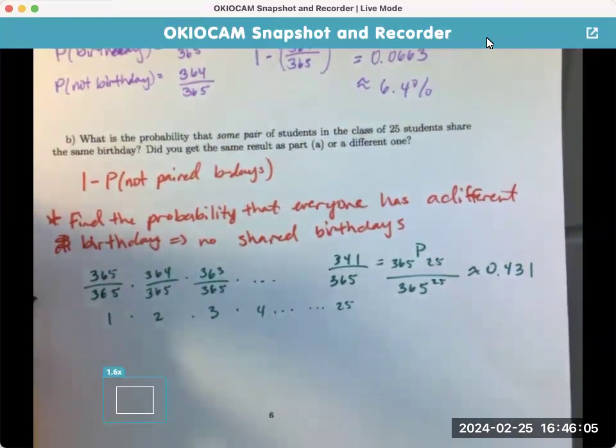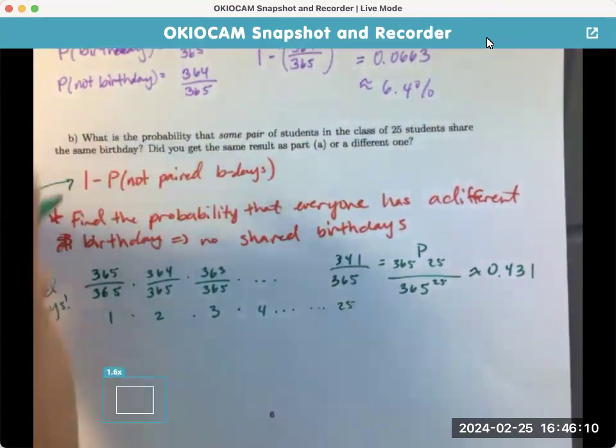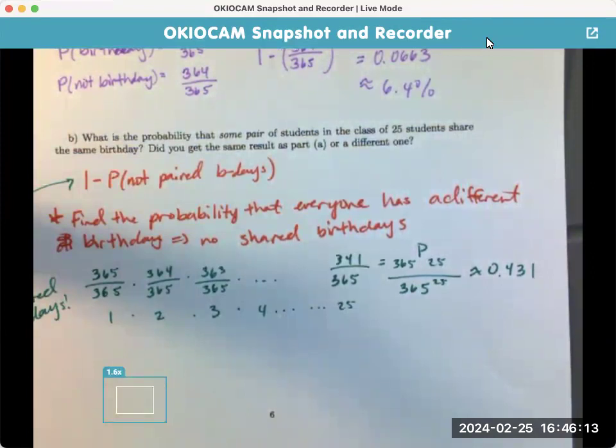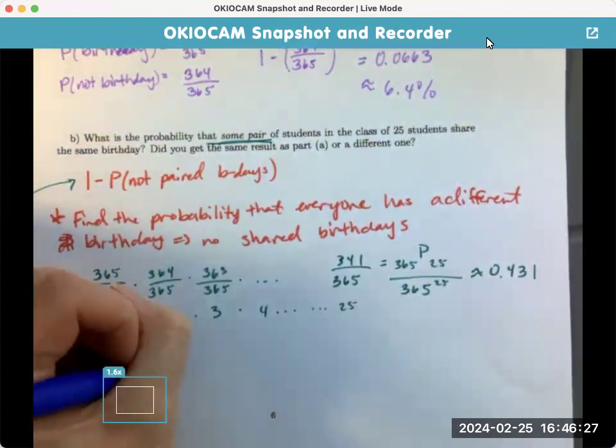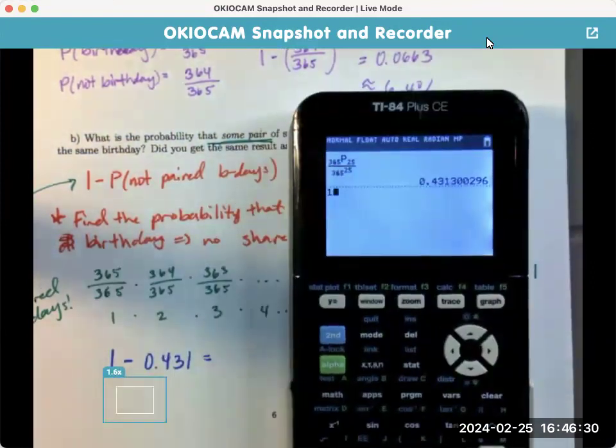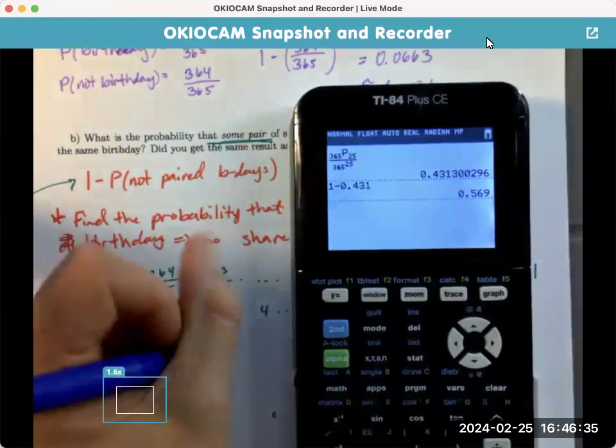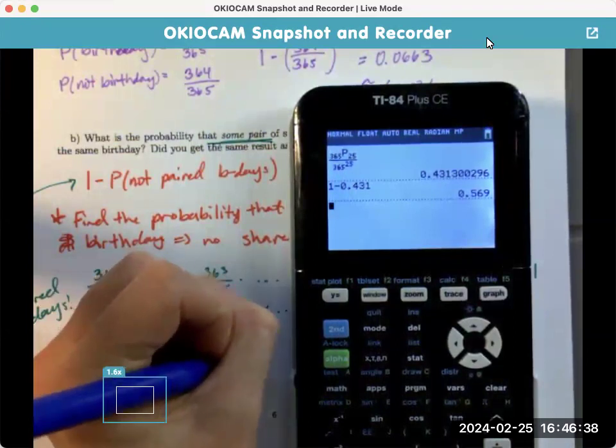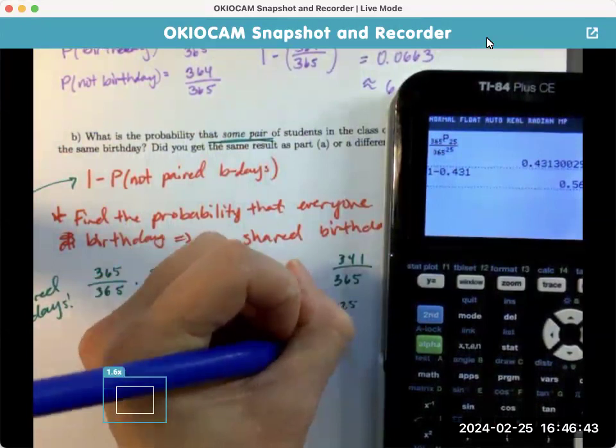This is no shared birthday, right? So, now we need to come back up to our at least one shared, right? Some pair, at least one. Let me change colors for visual effects. So, that's one minus, or not paired, no shared birthdays, 0.431. 1 minus 0.431 is 0.569. Or, let's call it 57% likely.